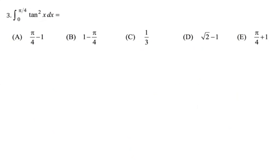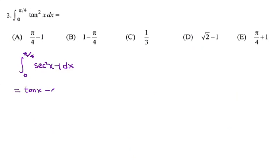Let's look at number 3. We have tangent squared. How do you integrate tangent squared? If you borrow the idea from trig identities, we realize that tangent squared is equal to secant squared x minus 1. This is easier to integrate because secant squared is the derivative of tangent. So the integral of secant squared would be tangent of x minus x, evaluated from 0 to pi over 4.